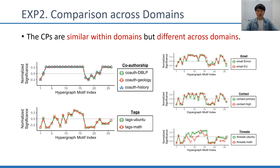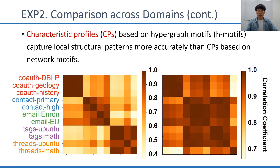Next, we compare characteristic profiles of the real-world hypergraphs. As seen in the figures, hypergraphs from the same domains have similar CPs. Specifically, all three hypergraphs from the co-authorship domain share extremely similar CPs, and the CPs of both hypergraphs from the text domain are extremely similar. However, CPs of the co-authorship domain are clearly distinguished from CPs of the text domain. We compute the correlation between CPs of different hypergraphs. For baseline, we compute CPs based on network motifs where the hypergraph is represented as a bipartite graph. The domains of the real-world hypergraphs are distinguished more clearly by CPs based on H-motifs than by CPs of network motifs.